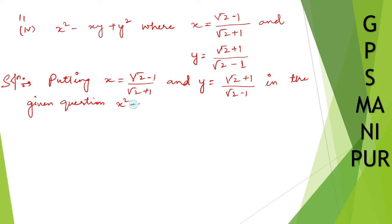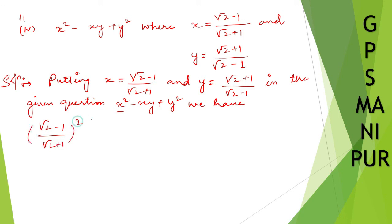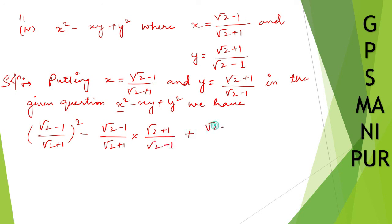In the expression x squared minus x y plus y squared, we are going to put the x and y values. So x squared becomes [(√2 minus 1)/(√2 plus 1)] squared; minus x y, which is [(√2 minus 1)/(√2 plus 1)] times [(√2 plus 1)/(√2 minus 1)]; plus y squared, which is [(√2 plus 1)/(√2 minus 1)] squared.